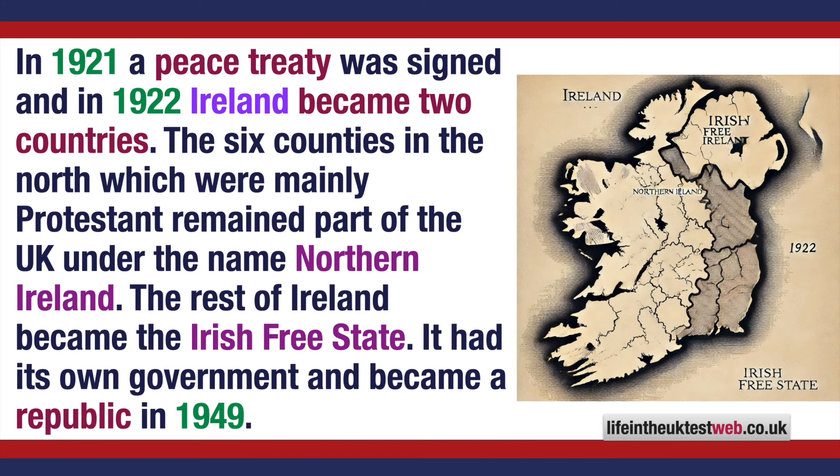In 1921 a peace treaty was signed, and in 1922 Ireland became two countries. The six counties in the north, which were mainly Protestant, remained part of the UK under the name Northern Ireland. The rest of Ireland became the Irish Free State. It had its own government and became a republic in 1949.